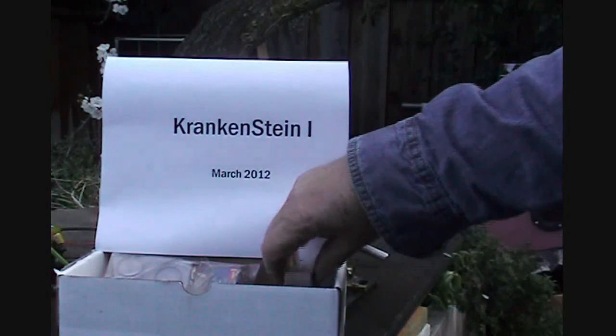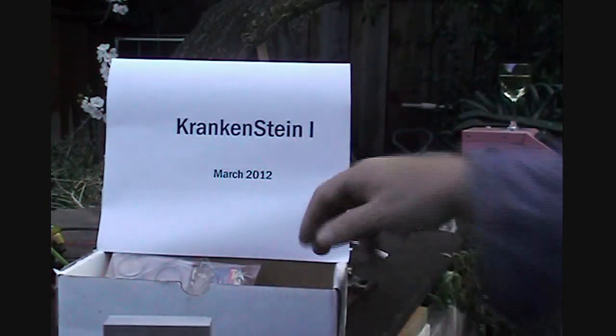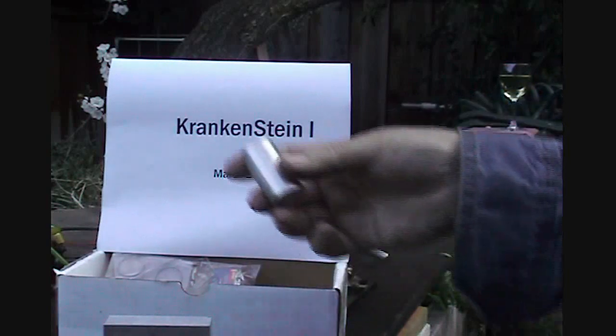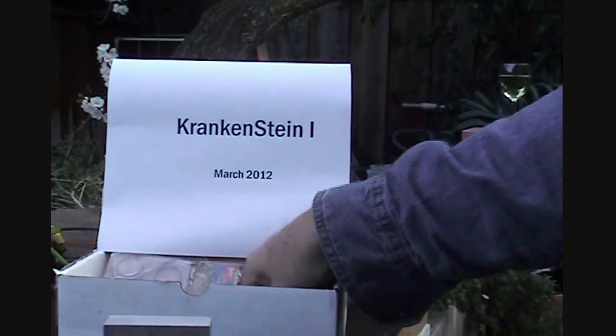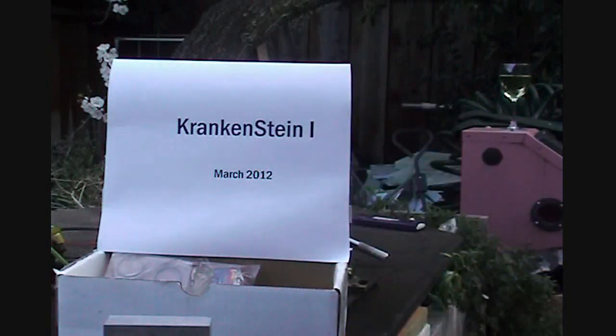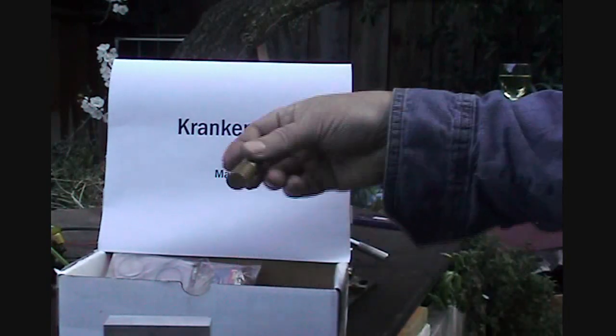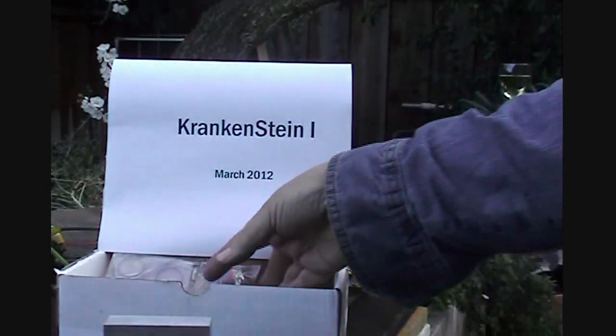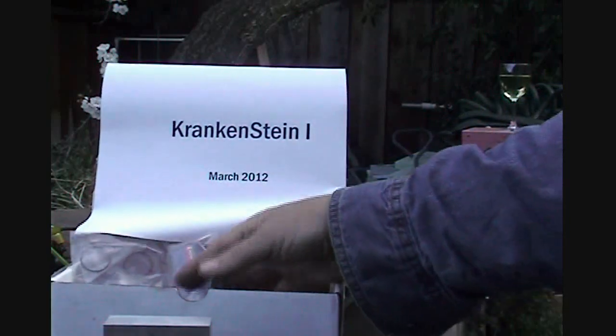Introducing Krankenstein 1. Krankenstein 1 is a four-stroke overhead cam internal combustion engine that runs on gasoline and is built out of commonly available materials - aluminum, both round and rectangular stock, and brass steel - nothing really fancy in here.